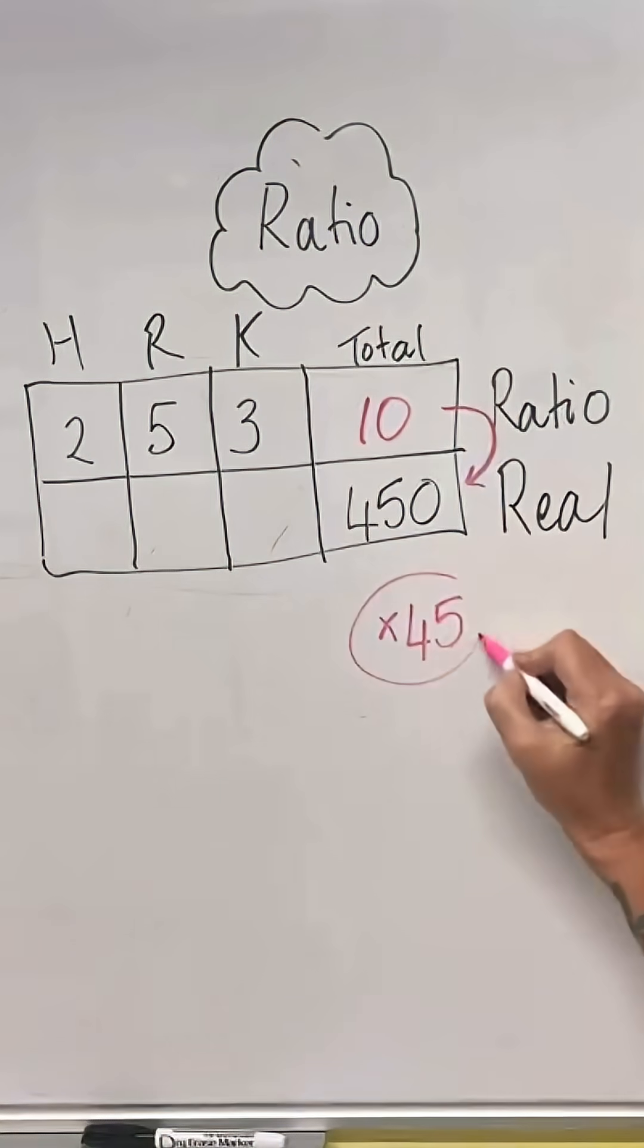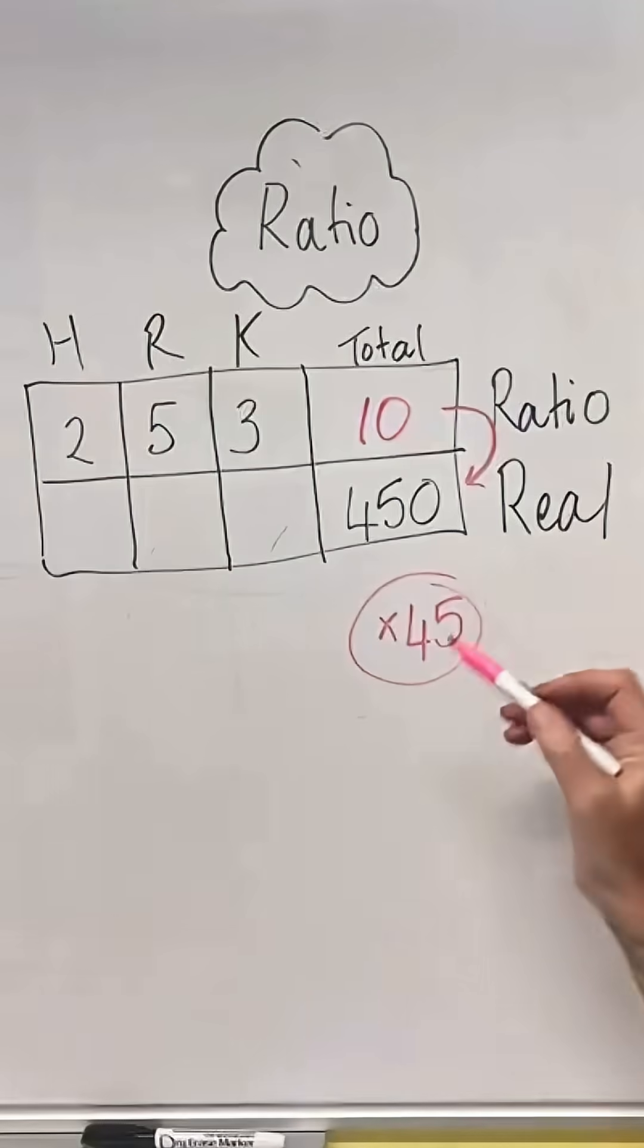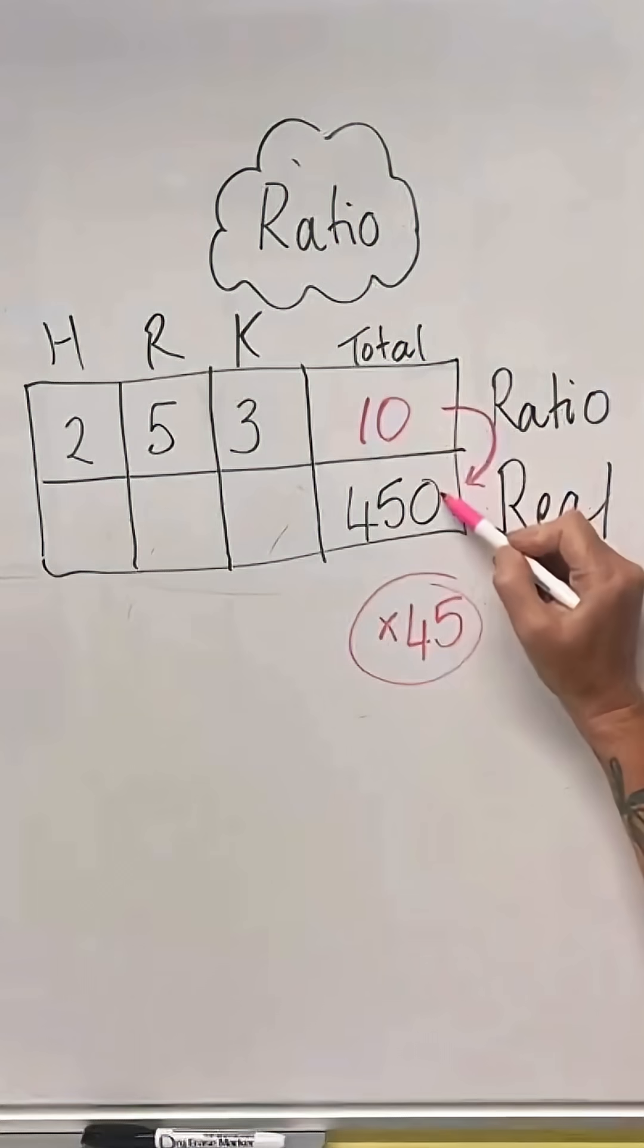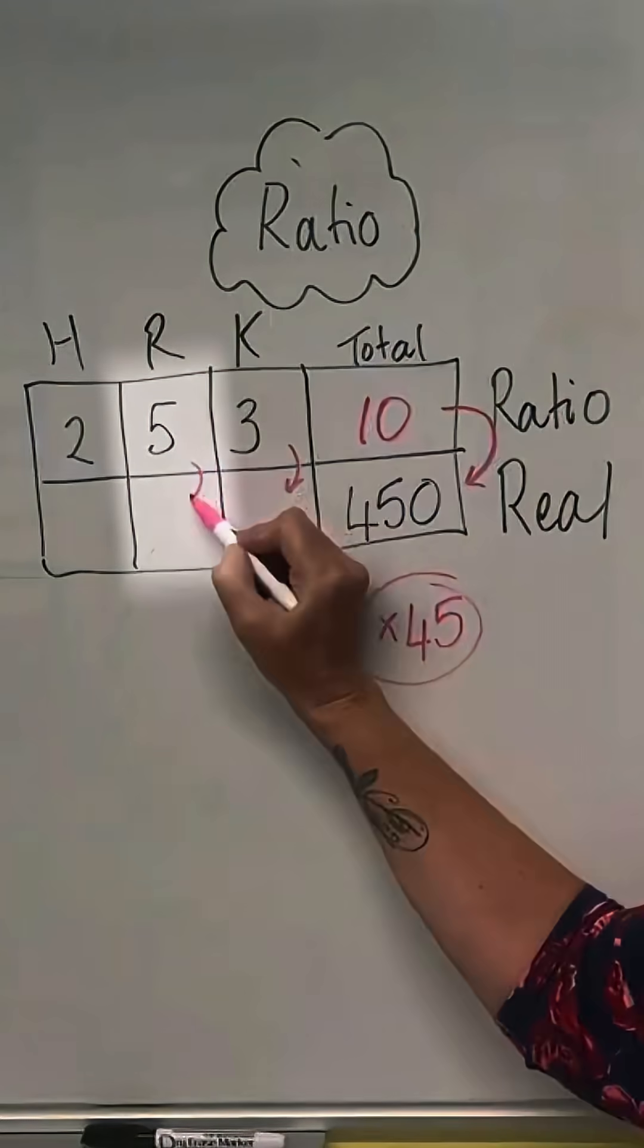And we always do this question in the same order. Now whatever this is, we are going to times all of these numbers by 45. If that has multiplied by 45, this one must multiply by 45, this one must multiply by 45, and this one must multiply by 45.